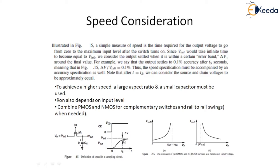We can assume that delta V upon V_in0 equals 0.1%, so there is a 0.1% error for an output to reach the maximum input level. Thus the speed specification must be accompanied by an accuracy specification as well. Note that after T equals T_s, we can consider the source and drain voltages to be equal.